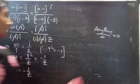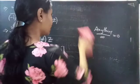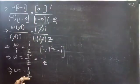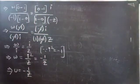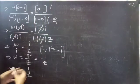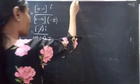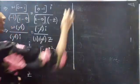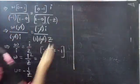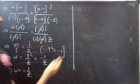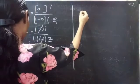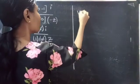Before confirming that the transformation is a bilinear transformation, let's verify the condition that ad − bc is not equal to 0.